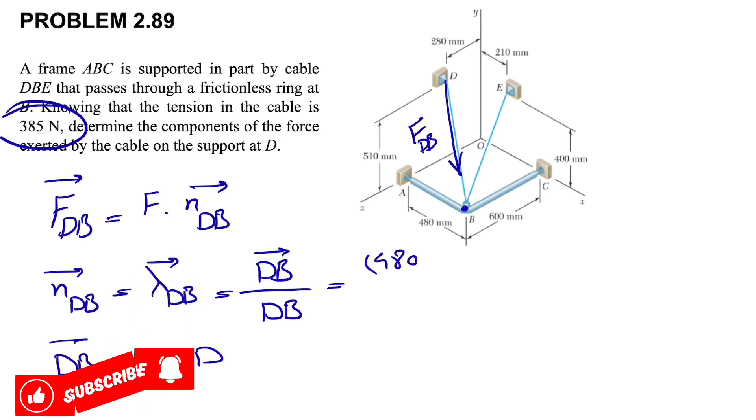For finding that, we find the x component of B and subtract the x component of D. The x component of B is 480 millimeters, and the x component of D is zero. So this will be our i component.